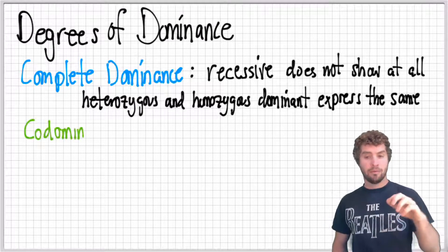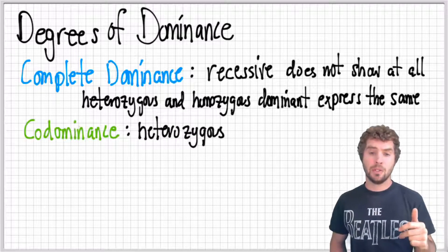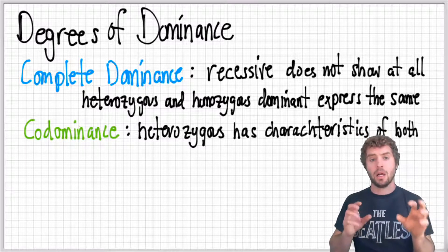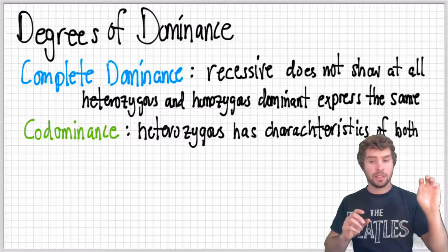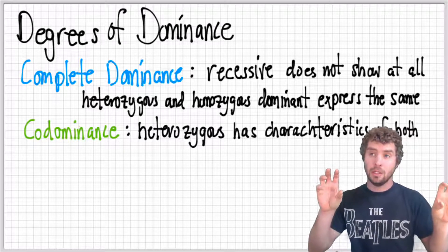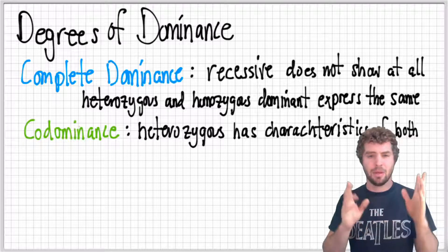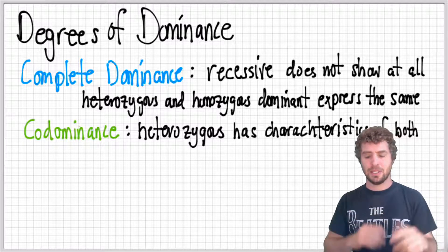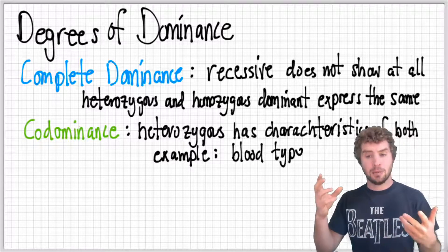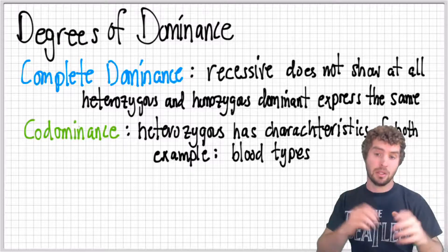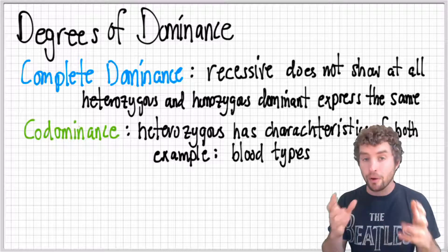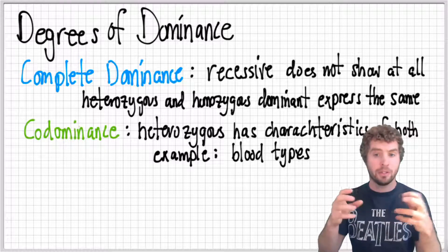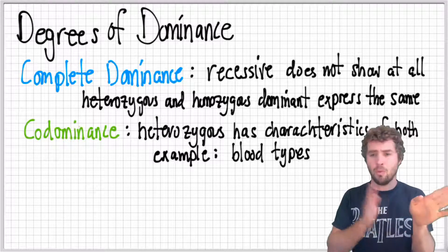Another variation is called codominance, where the heterozygous has characteristics of both homozygous types. Think of brown eyes and blue eyes — though eye color may not be the best example. In codominance, it has a little bit of both. Blood types is actually a good example: when you inherit one blood type from one parent and another from the other parent, you have different characteristics of each — not a mix in between, not one or the other, but a little bit of both.